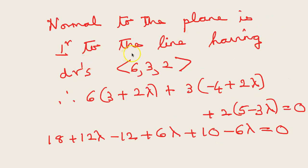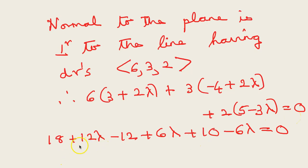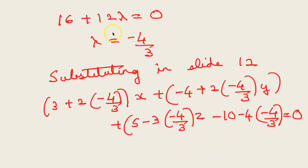Since the normal to the plane is perpendicular to the line with direction ratios 6, 3, 2, their dot product equals zero: 6(3 + 2λ) + 3(−4 + 2λ) + 2(5 − 3λ) = 0. Expanding: 18 + 12λ − 12 + 6λ + 10 − 6λ = 0. Simplifying: 16 + 12λ = 0, so λ = −4/3.